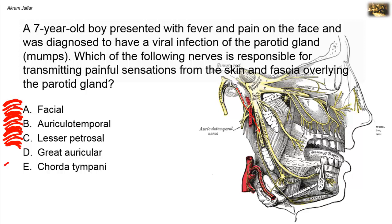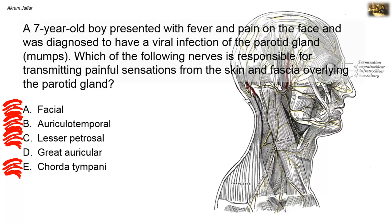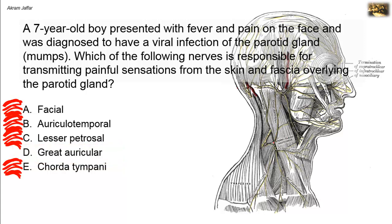The great auricular nerve is a branch from the cervical plexus. It leaves the cervical plexus behind the posterior border of the sternocleidomastoid muscle. It is one of the four cutaneous branches of the cervical plexus — the lesser occipital, the great auricular, the transverse cervical, and the supraclavicular nerves. The great auricular nerve extends upwards and anteriorly.